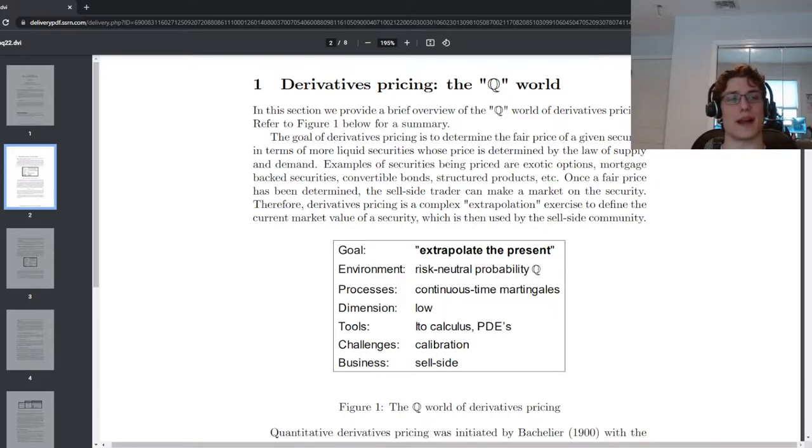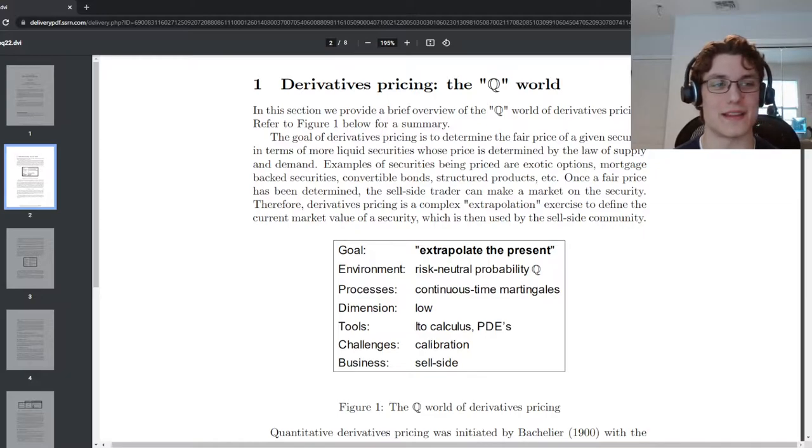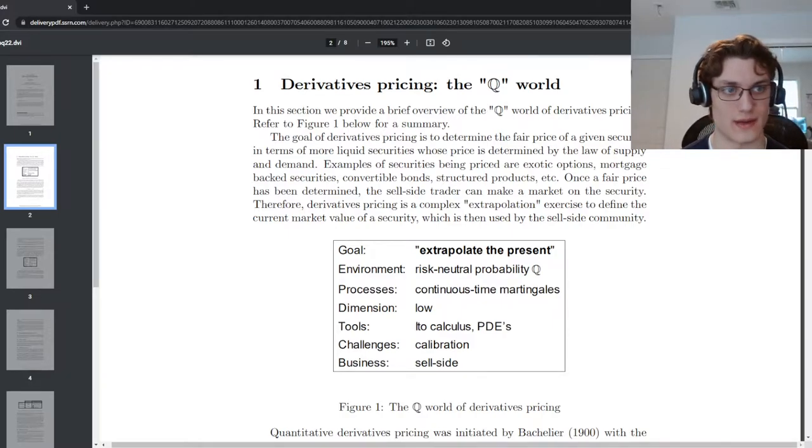Let's just talk about the goal. What do they mean by extrapolate the present? Well, if we take a look at the market, we can go on Yahoo Finance and we can see that prices exist already for instruments. We can look at the current value of Apple stock. We can look at the value of a call option that expires in one month at the strike price of whatever Apple's trading at, perhaps above or below the spot, the closest strike price, and we have market prices for all of these instruments already, and they're publicly available.